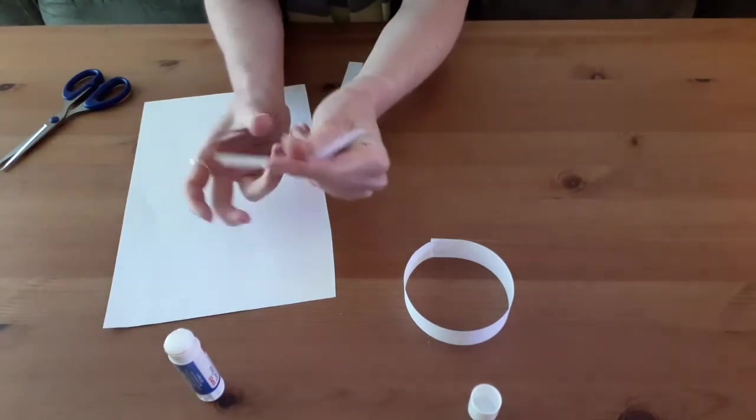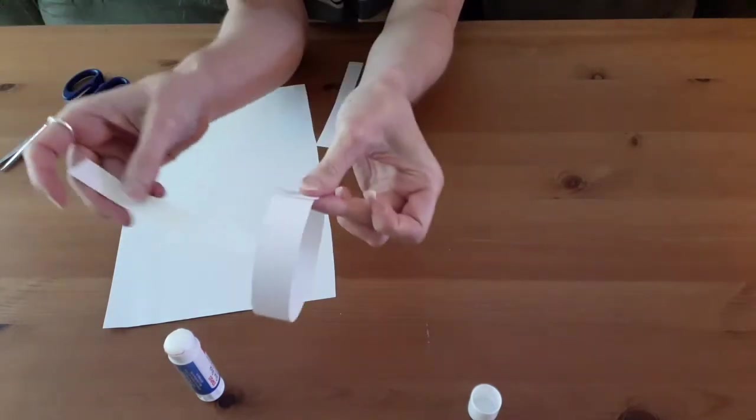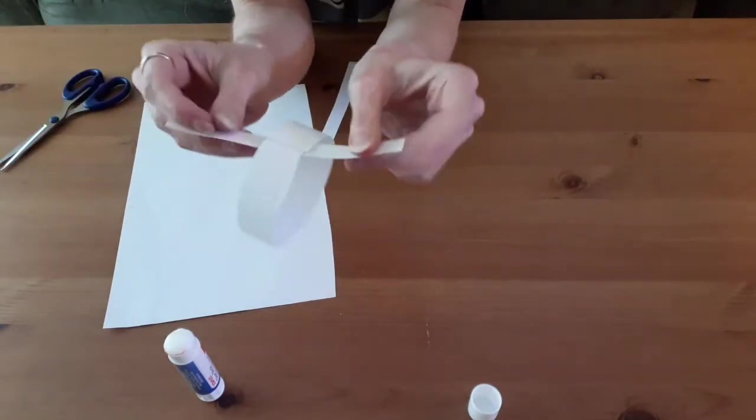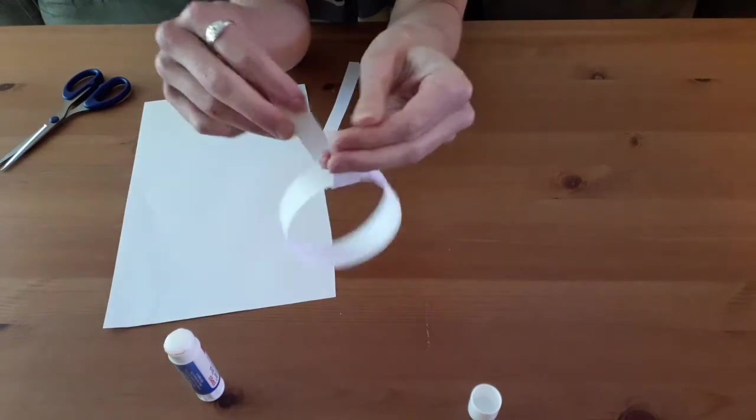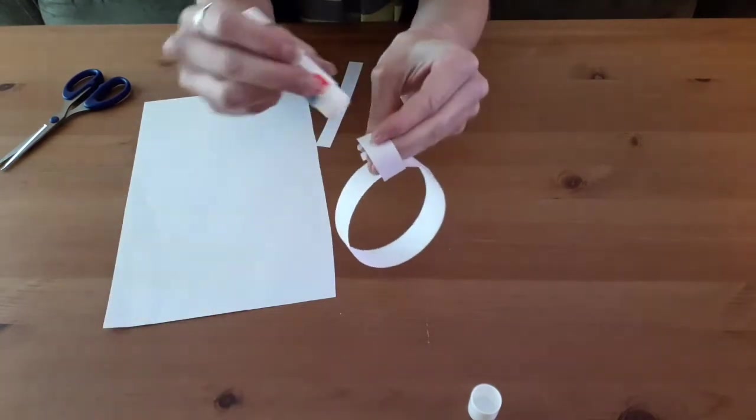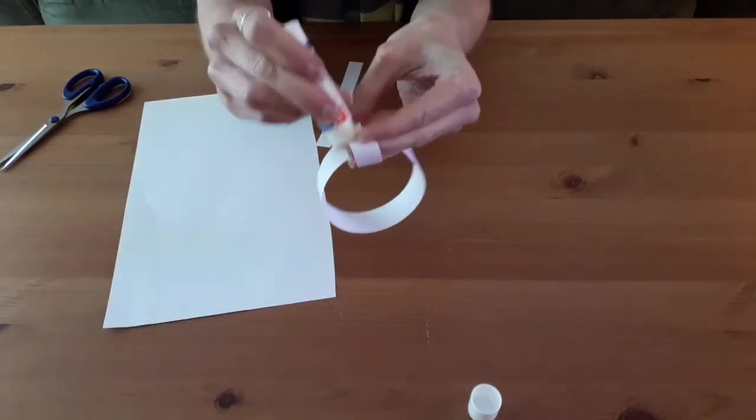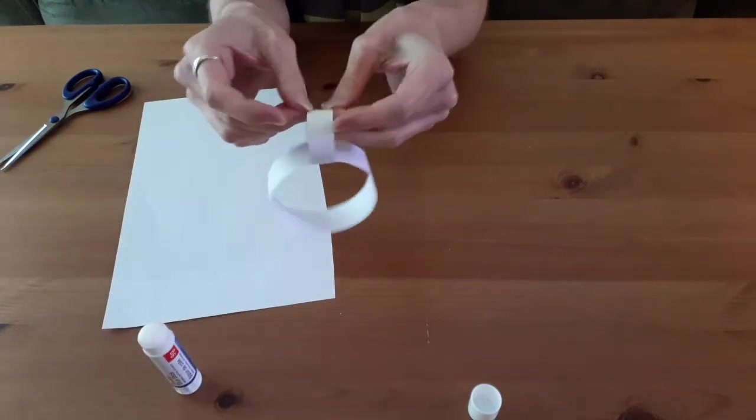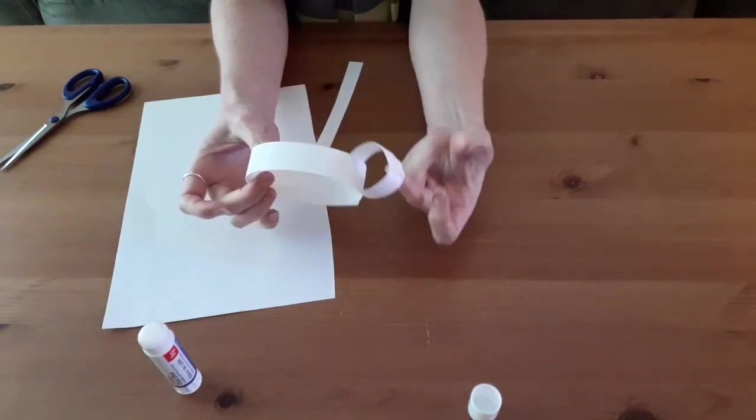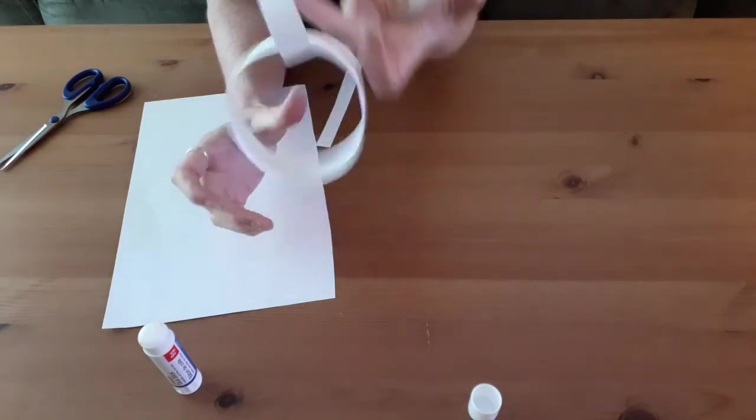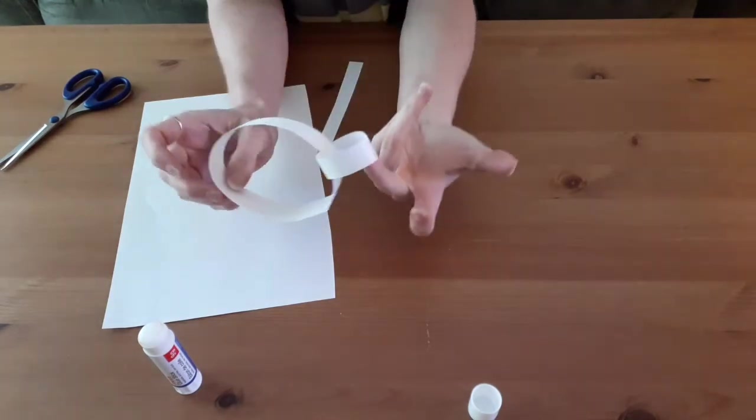So once you've got your second strip of paper, you put it through the first one so it's hanging off of there. And then you just do exactly the same thing, and glue it on. And now you have your second one, and that's how you're going to make your chain.